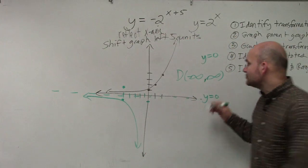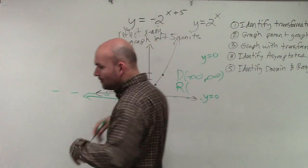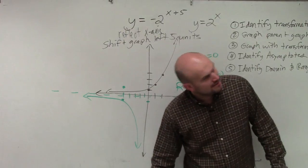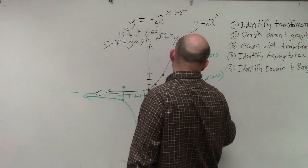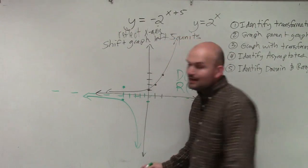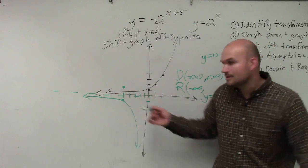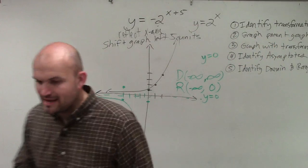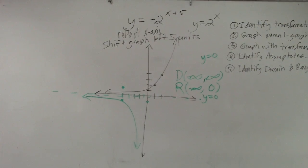Now let's do the range. How low is the y-coordinate going to go? Negative infinity. And how high does this graph go up to? Zero. And that is all I expected you guys to learn from last class period.